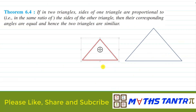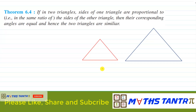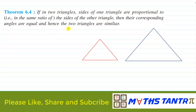Now coming to the next criteria — the Side-Side-Side criteria of similarity, written in the form of a theorem. What does it say? If in two triangles the sides of one triangle are proportional to the sides of the other triangle in the same ratio, then their corresponding angles are equal and hence the two triangles are similar.